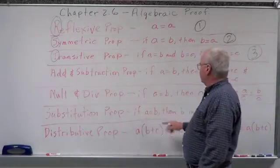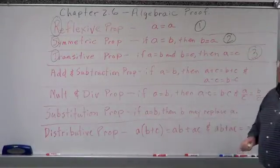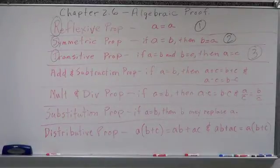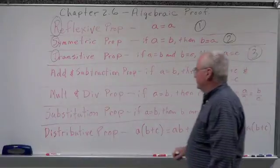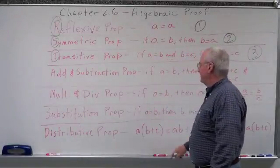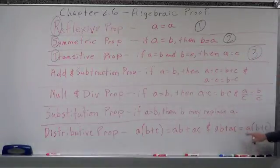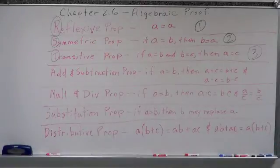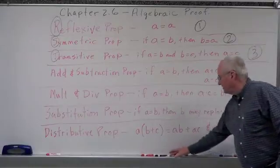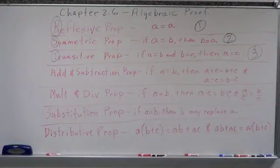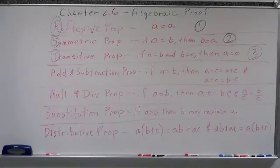Substitution property: if A equals B, then B may replace A anywhere I want it to. If they are the same, then I can use either one of them wherever I want to. Distributive property: A times the quantity B plus C equals A times B plus A times C, and A times B plus A times C equals A times the quantity B plus C. These are the algebraic properties that we use to solve algebraic equations and to prove algebraic equations.